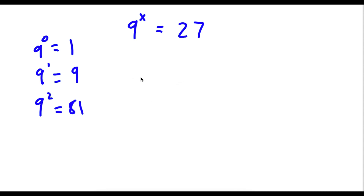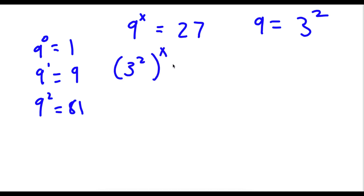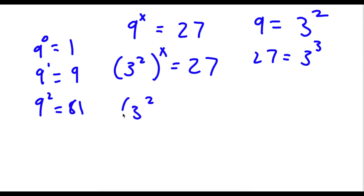Alright, so to solve this, it's actually really simple. 9 is the same thing as 3 to the power of 2. So now if I replace 9 with 3 to the power of 2, I get 3 to the power of 2 to the power of x is equal to 27. Now 27 is equal to 3 to the power of 3, so I'm going to replace 27 with 3 to the power of 3. So now I have 3 to the power of 2 to the power of x is equal to 3 to the power of 3.